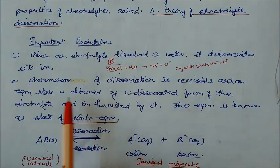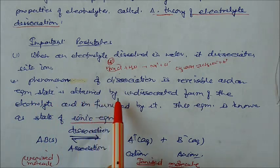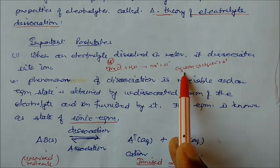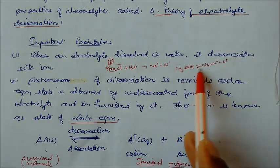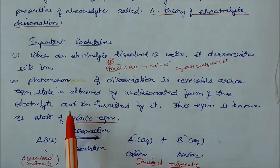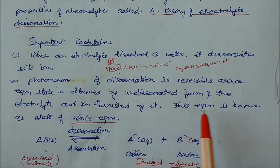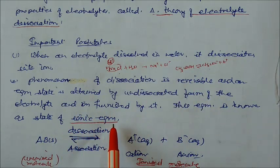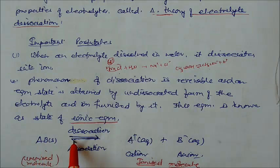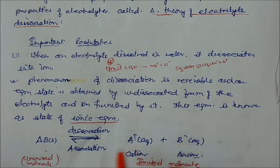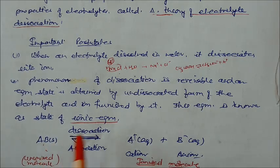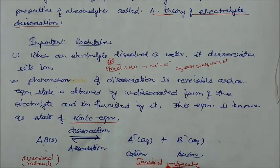A state of ion equilibrium is attained between the undissociated form and the dissociated form. Any unionized molecule undergoes dissociation to form A⁺ and B⁻, and those ions can recombine to form the undissociated molecule. So we have both the undissociated (unionized) and dissociated (ionized) forms coexisting at equilibrium.